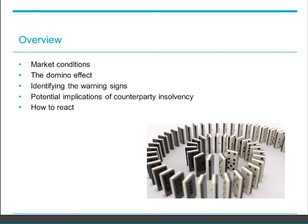The insolvency of a joint venture party or a key supplier or a key customer, depending on where you are in the supply chain, can have serious ramifications for your business. In some cases it has the potential to become like a domino rally. The knock-on effects make it crucial to understand the extent to which your business is dependent upon companies that may be facing distress or that could be severely impacted by an insolvency elsewhere in the supply chain. Today we are going to look at ways to identify warning signs of distress in the counterparty to a contract, look at some of the potential implications of the insolvency of a counterparty and how to react, all in a 20 minute period. Our focus is going to be on the UK perspective but much of what we say will apply internationally as well.